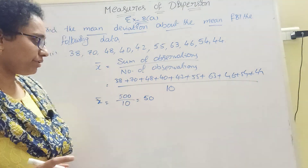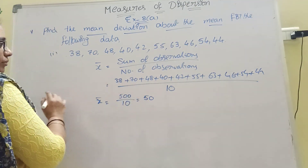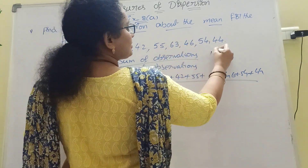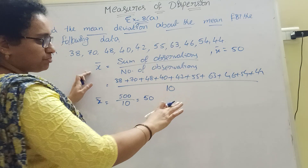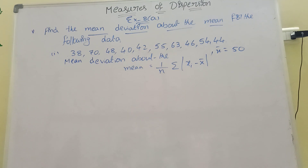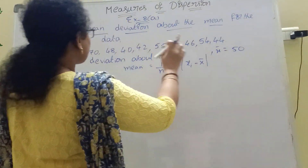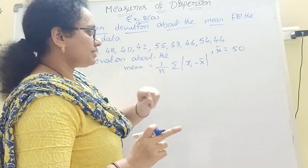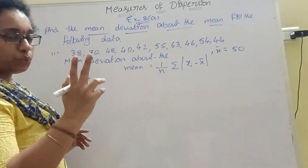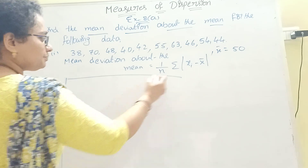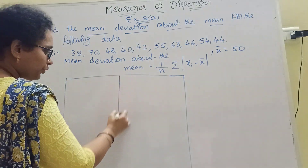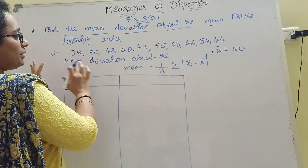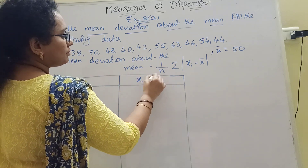Now, what is the formula for mean deviation about the mean? Mean Deviation = (1/N) × Σ|xi − X̄|. For ungrouped data we need columns: xi and |xi − X̄|. Xi means each observation minus X̄.